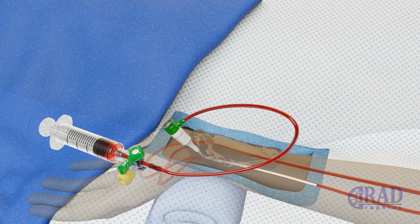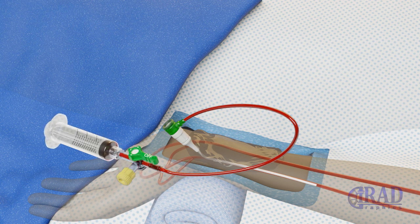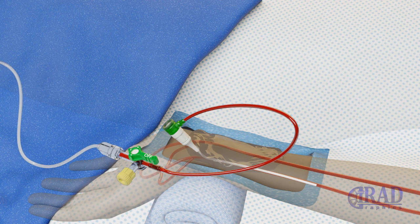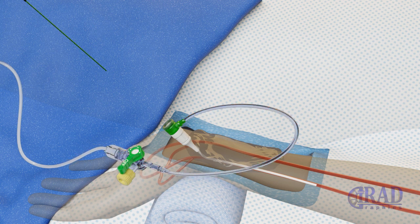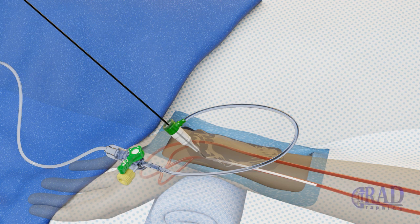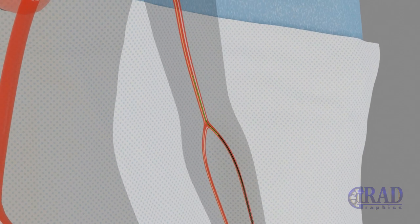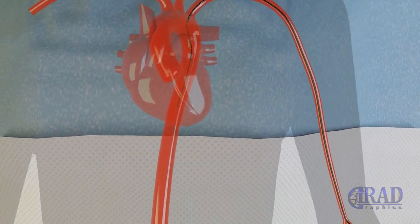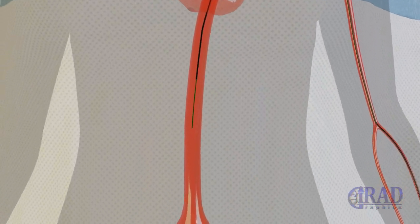Then, normal saline is continuously infused through the sheath to avoid possible clotting. A combination of catheter and wire is advanced from the left radial artery to the aorta and subsequently to the internal iliac artery.